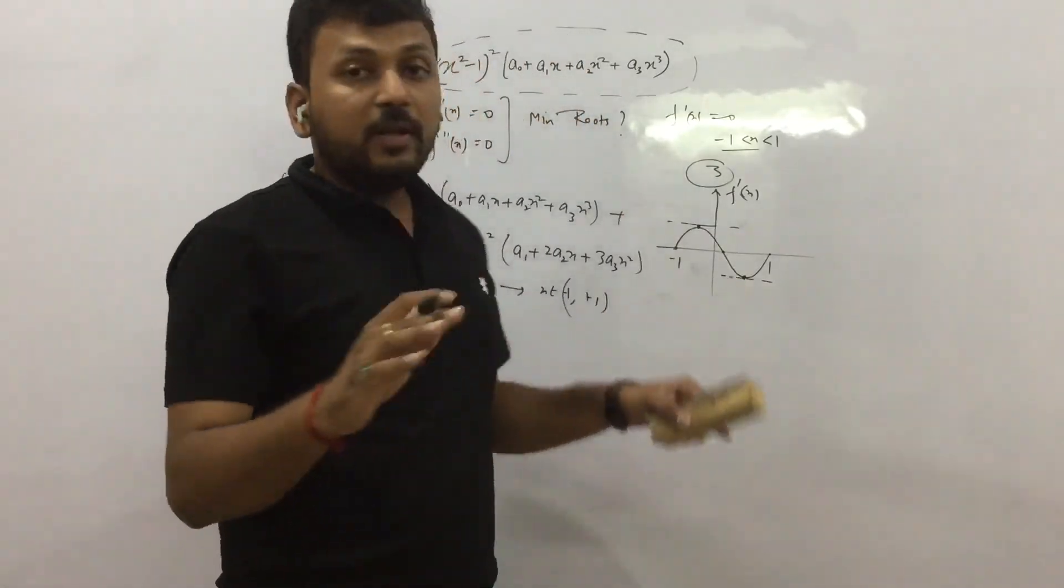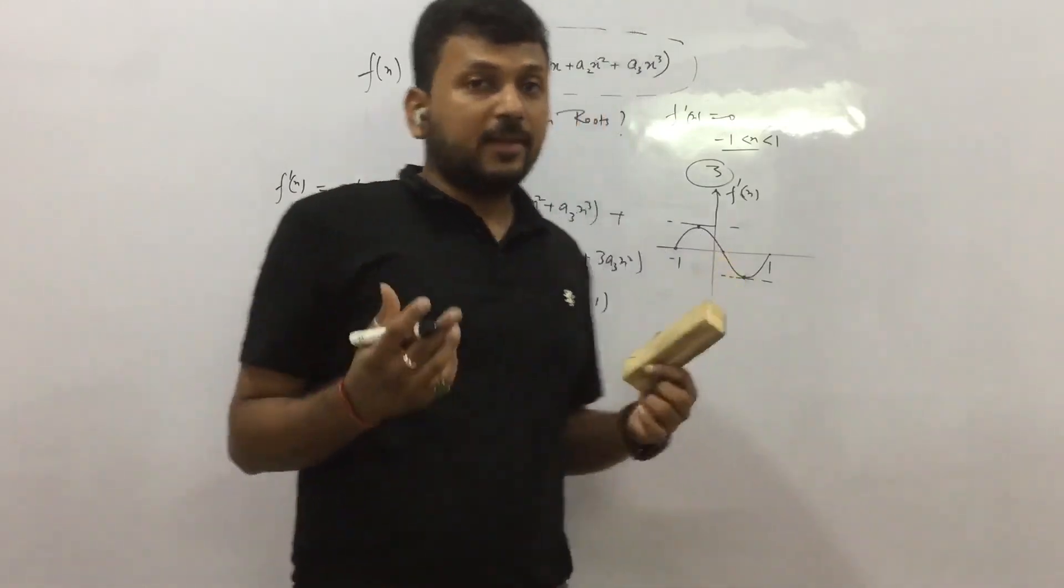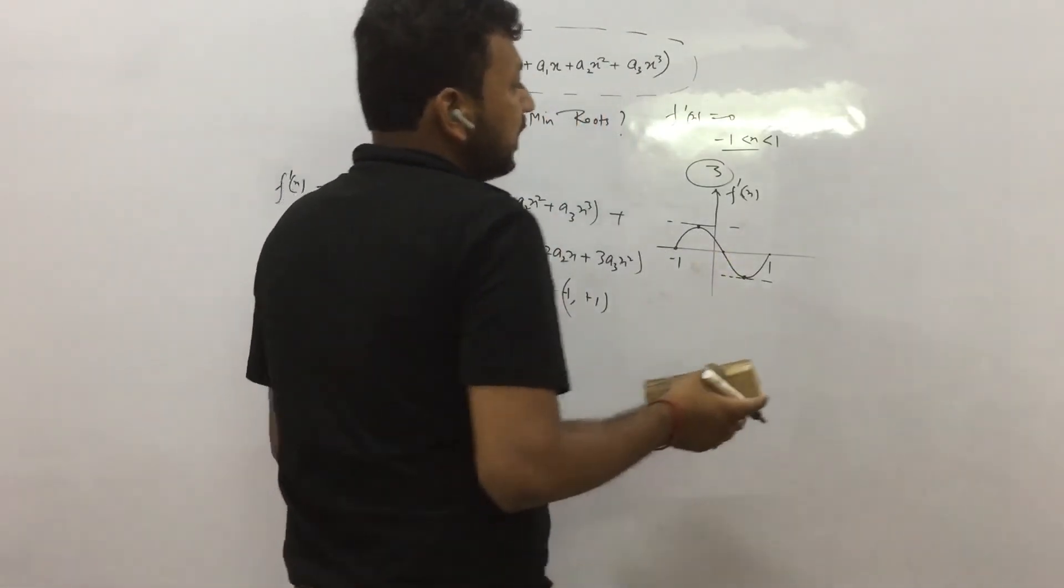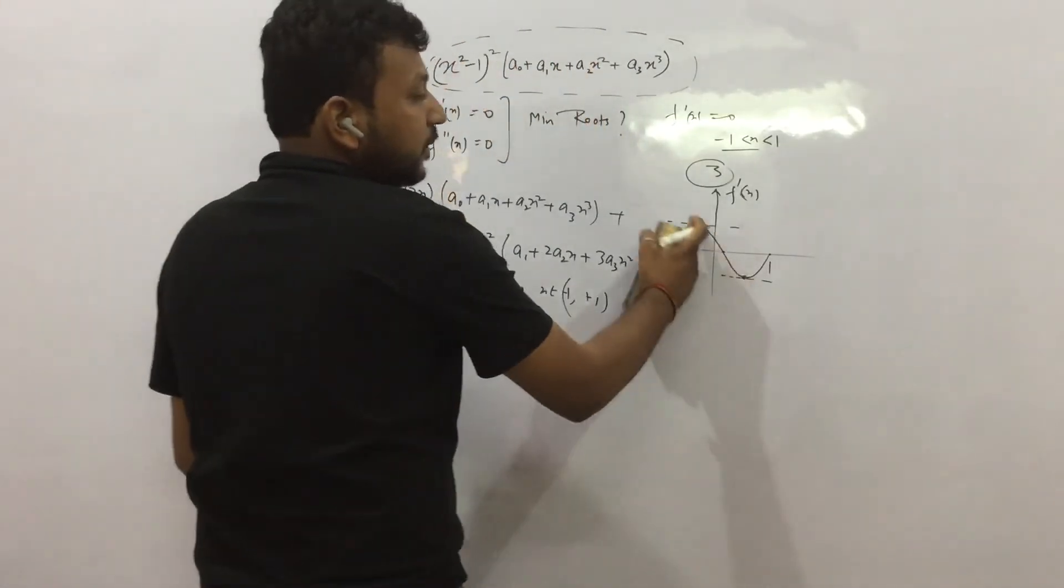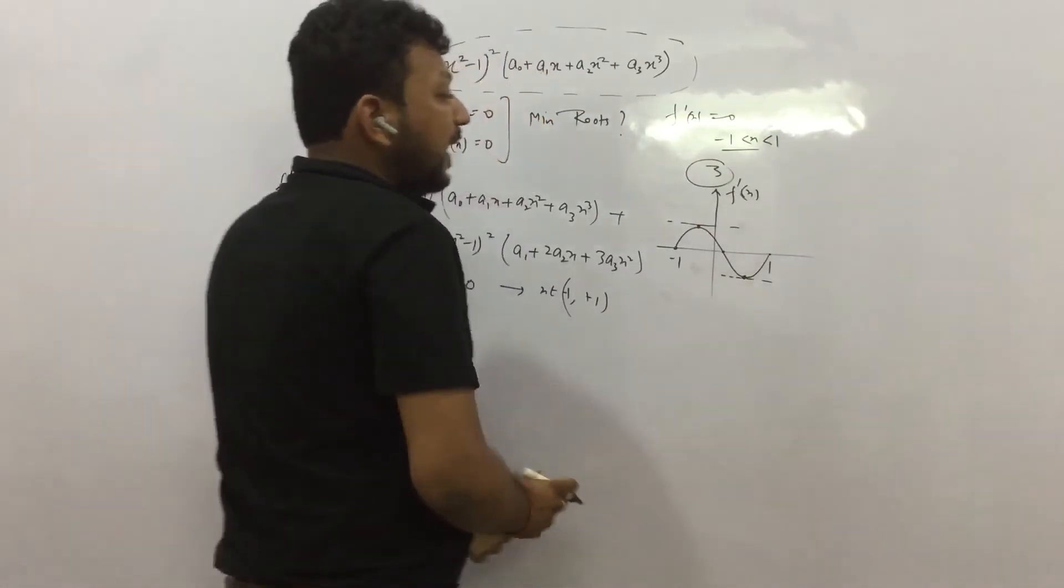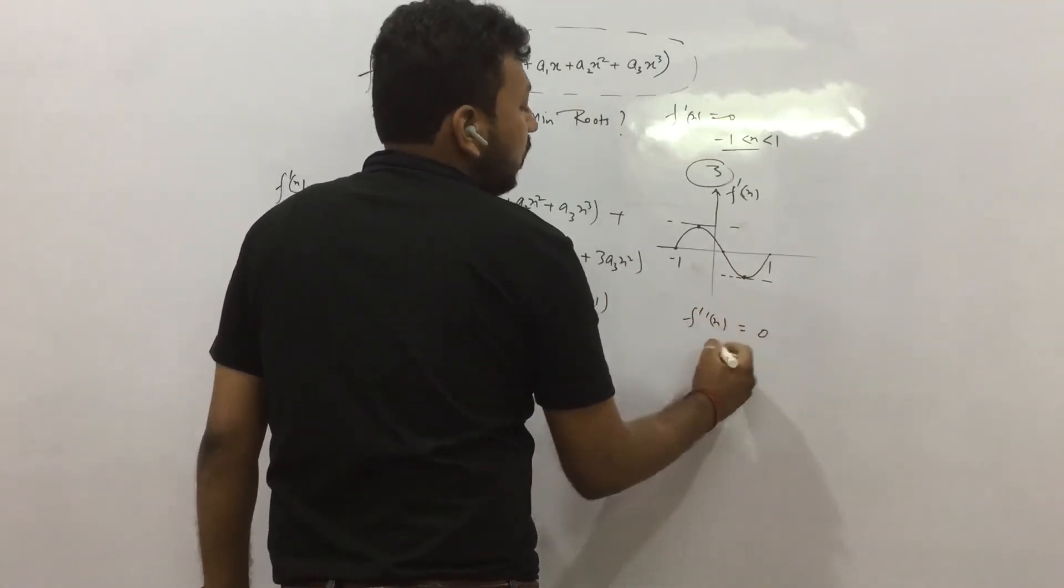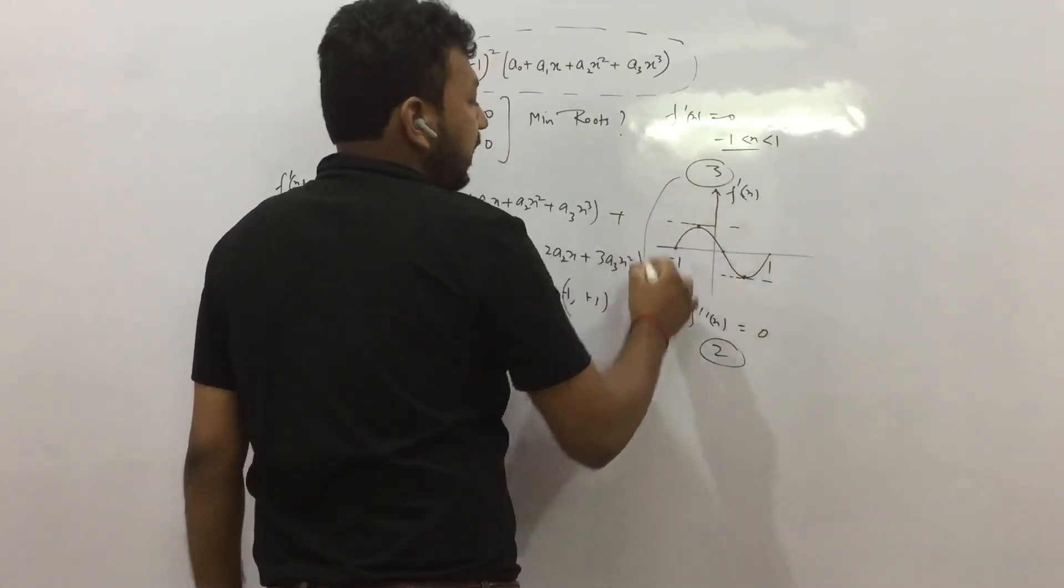That means f''(x). Again the derivative of f'(x) is f''(x). Now f''(x) is 0 at 2 points at least. It can have multiple points from the diagram that I just erased, but at least at 2 points f''(x) = 0.